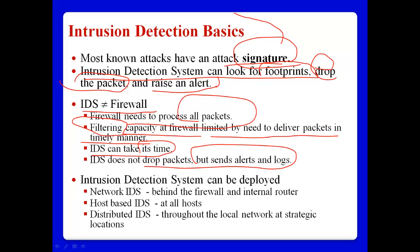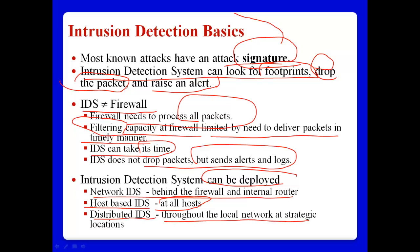Intrusion detection systems can be deployed in different places. For example, a network IDS means an IDS behind a firewall and internal routers. Host-based IDS means HIDS at all hosts. And distributed IDS is placed throughout the local network at strategic locations. According to the needs of each company, we can deploy these kinds of intrusion detection systems.